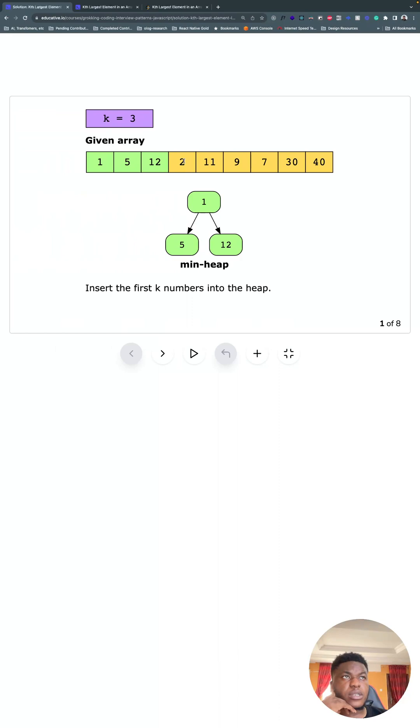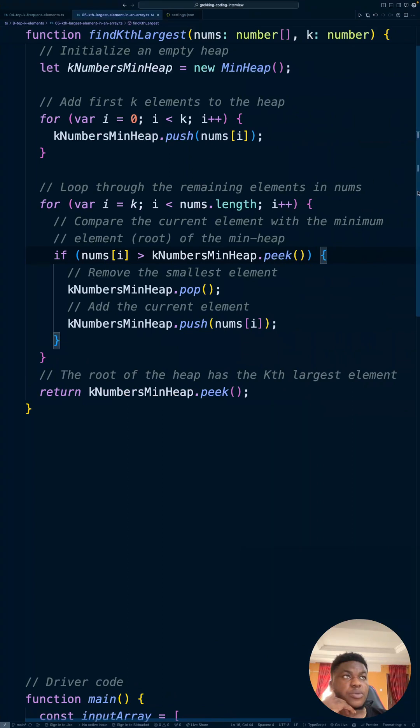So in this case, we're checking if 2 is bigger than 1. Yes, it is. Kick 1 out, put 2 in there. That's what this does. And we do it for the rest of the list. And when we're done, just peek. Return what's at the root. Easy if you need. That is all.